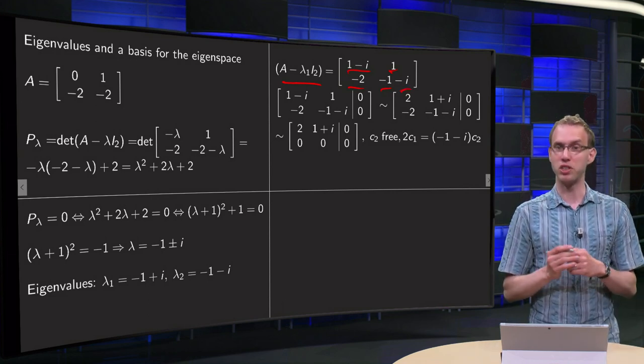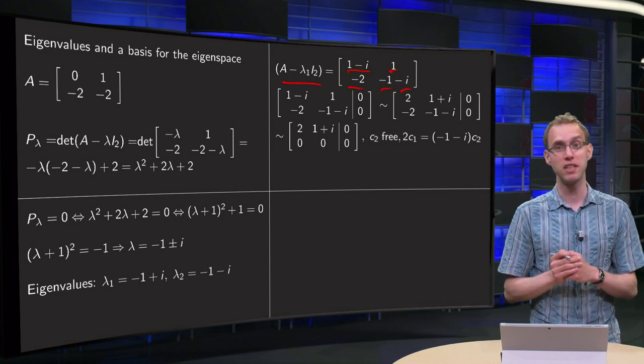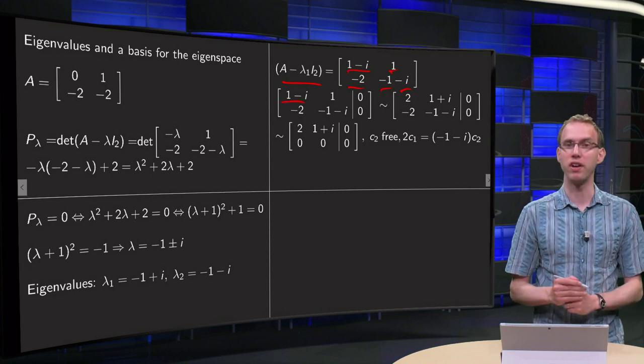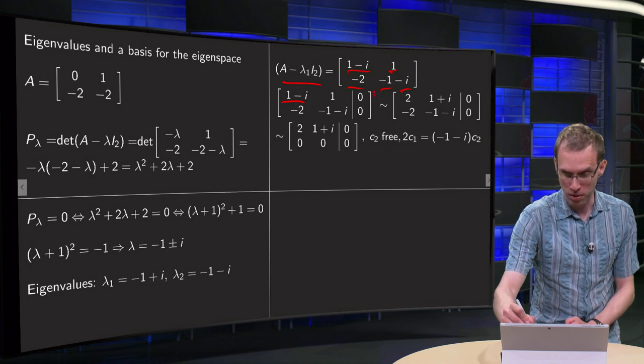And then we have to do row reduction, add zeros on the right hand side and row reduction in order to find the null space. That's kind of annoying because we want 1 over here. We can do a little trick though: we can multiply the first row by 1 plus i.